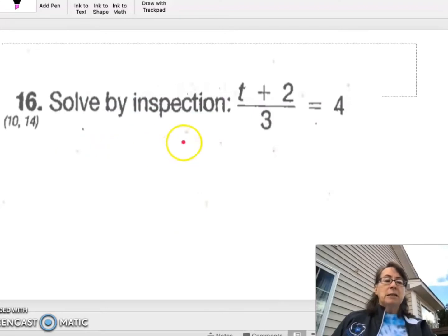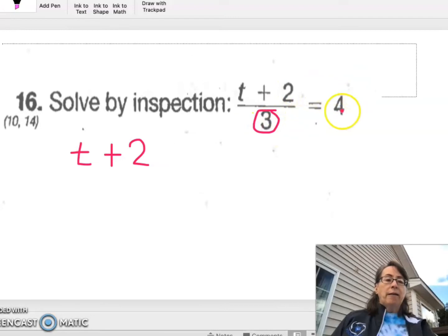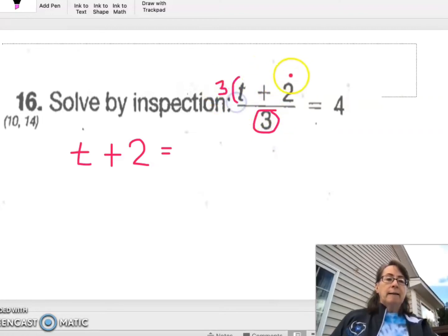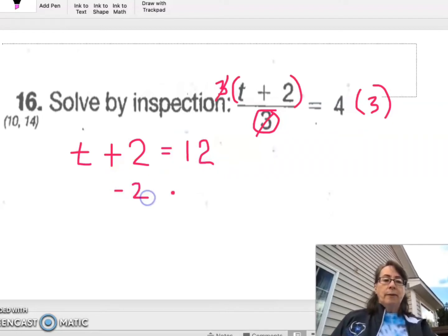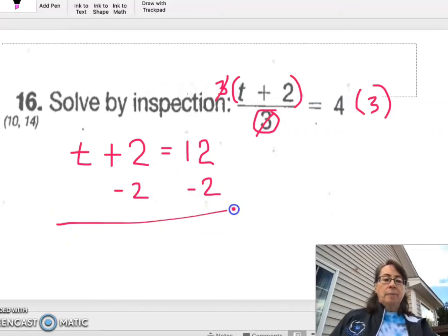Number 16. Solve by inspection. T plus 2. I'm just going to multiply both sides by 3. When I multiply by 3 on this side and 3 on this side, this 3 cancels this 3 to give us T plus 2 equals 12. So if I subtract 2 and I subtract 2, I'm going to get T equals 10.